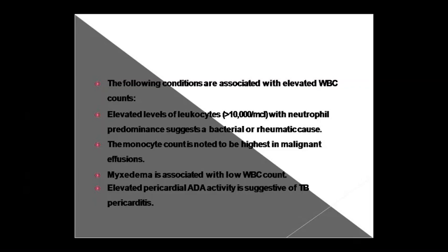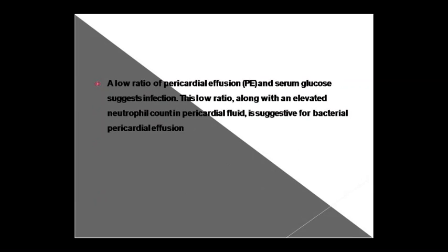In myxedema, the WBC count is low — keep this in mind: low WBC count suggests myxedema. If pericardial ADA (adenosine deaminase) activity is elevated, it indicates TB pericarditis — tuberculosis-associated pericardial inflammation. Also, if the pericardial fluid-to-serum glucose ratio is low, it suggests infection. If this low ratio is accompanied by elevated neutrophil count in the pericardial fluid, it indicates bacterial pericardial effusion.